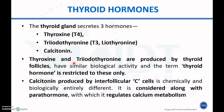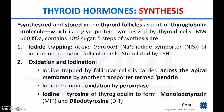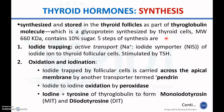Under the influence of thyroid stimulating hormone from the anterior pituitary, thyroid hormones are synthesized and stored in thyroid follicles as part of thyroglobulin molecules, which are glycoproteins synthesized by thyroid cells with a molecular weight of 660 kilodaltons, containing 10% sugar. There are five steps for the synthesis of thyroid hormone: iodine trapping, oxidation and iodination, coupling, storage and release, and peripheral conversion of T4 to potent T3.